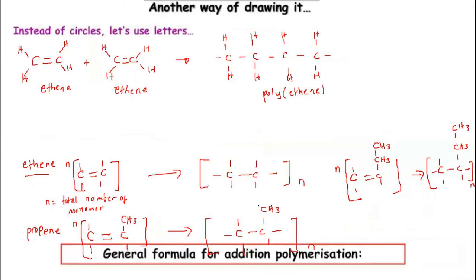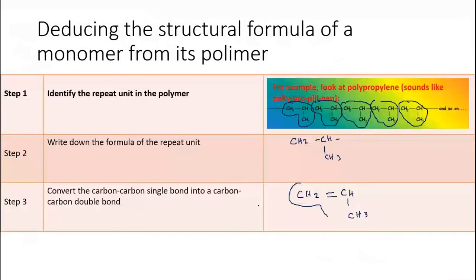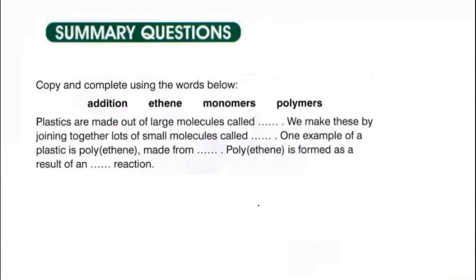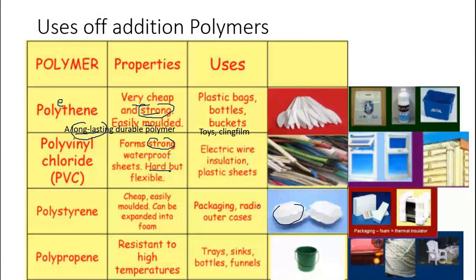Many materials around us are made from polymers — tupperware, phone cases, bags, and pants are all made from polymers.